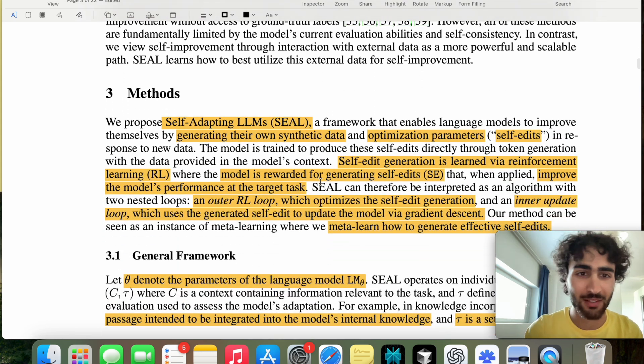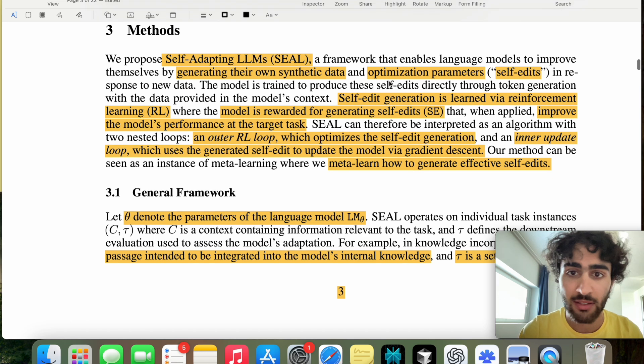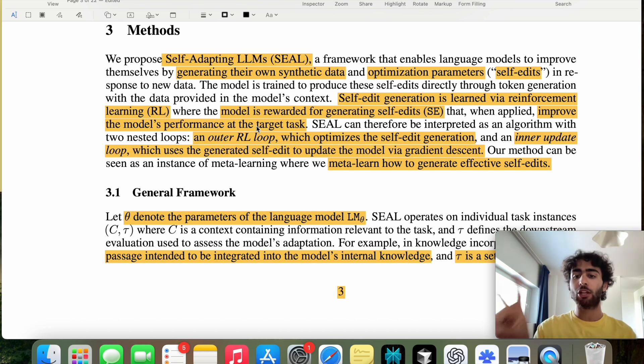Yeah, this is another autological term, so I don't really need to dive into that. They talk about SEAL. I think this is the third time that they proposed SEAL, and we're only in the third section, so it's quite impressive. It generates its own synthetic data and optimization parameters, which are the self-edits. And self-edit generation is learned via RL, where the model is rewarded for generating self-edits that, when applied, improve the model's performance at the target's task. And the two target tasks that they propose are knowledge incorporation and in-context learning.